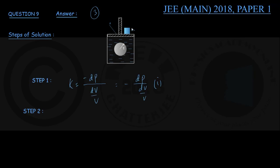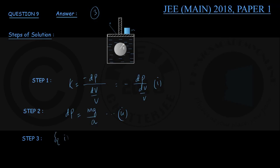In step two, when mass M is placed on the piston — which is massless — the increment in pressure ΔP equals the force of gravity on this mass, that is mg, divided by the cross-sectional area of the piston, small a. This is equation number two. In step three, going back to equation one with a little rearrangement, we can write ΔV/V — the fractional change in volume of the sphere — as minus ΔP upon K.